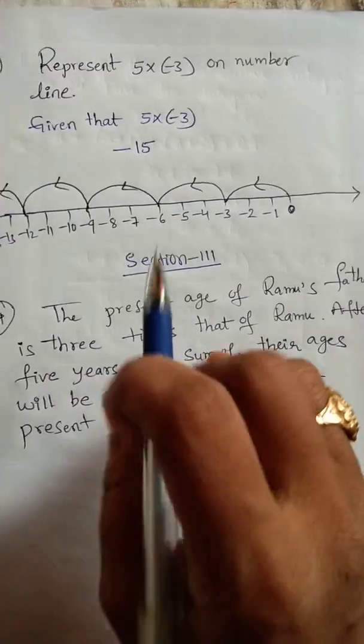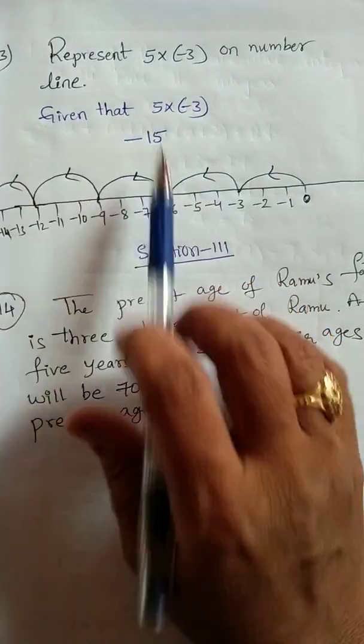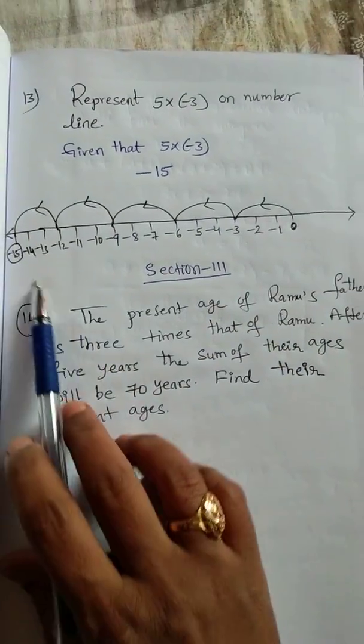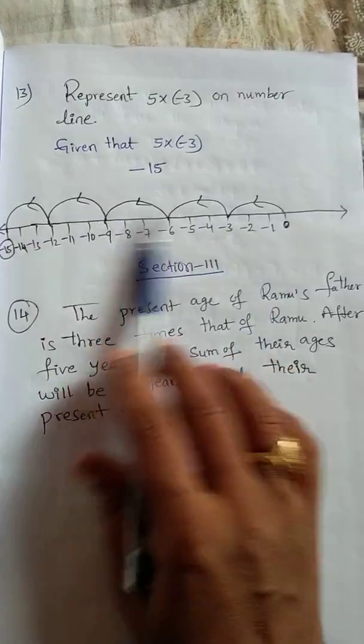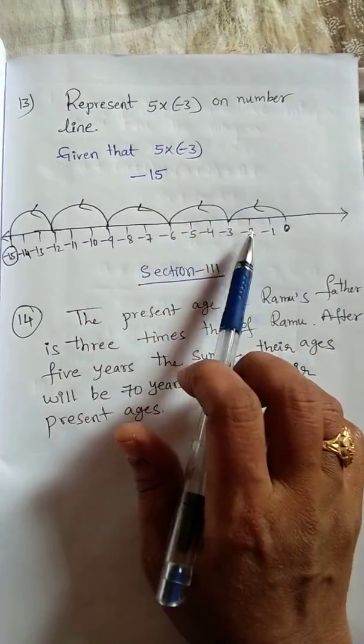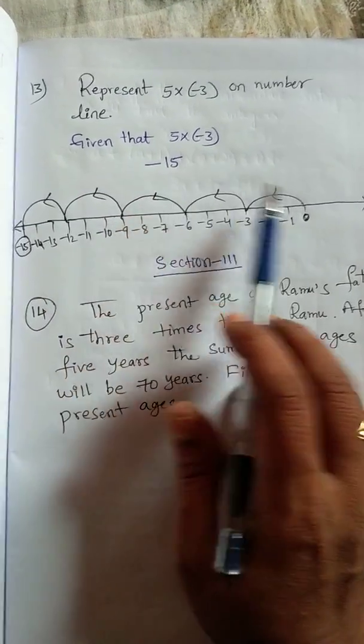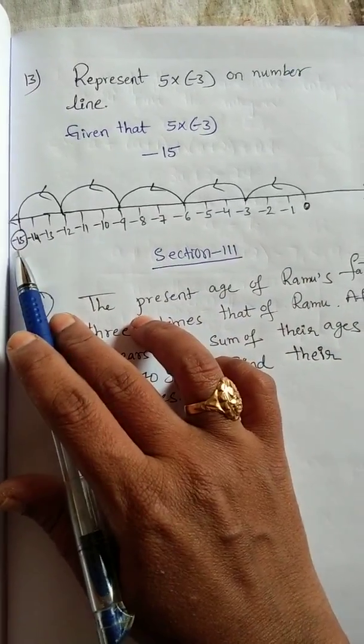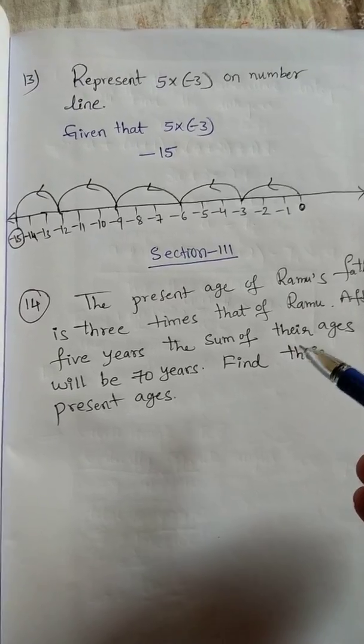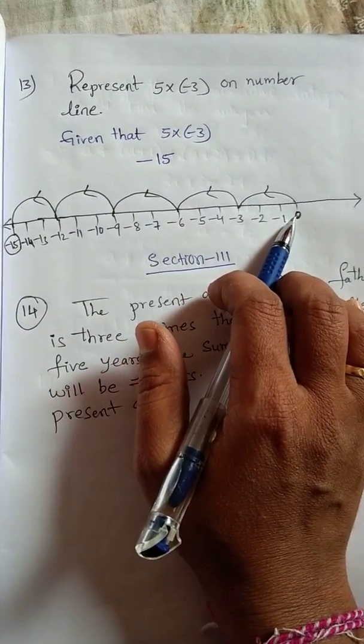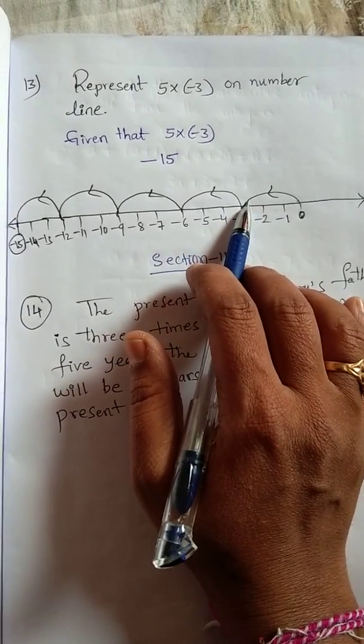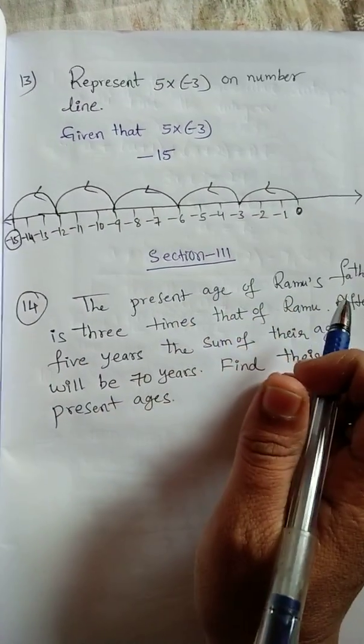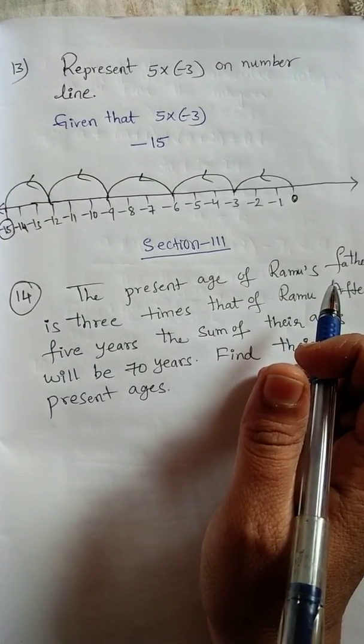Thirteenth question: represent 5 into minus 3 on the number line. First do normal multiplication. Plus into minus gives minus, 5 times 3 is 15. So minus 15. You take the number line. On that number line, minus number is enough to take because here only minus 15 we want. Simply we can transpose 3 digits, that up to will get minus 15. You can write in sentence formation: starts from 0, take the 3 steps. In each jump, like that, 5 jumps you can take to get minus 15.